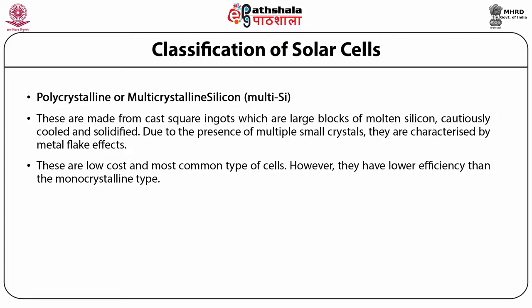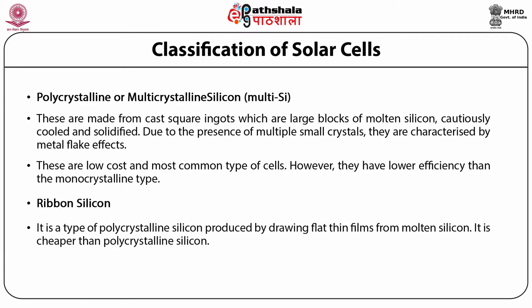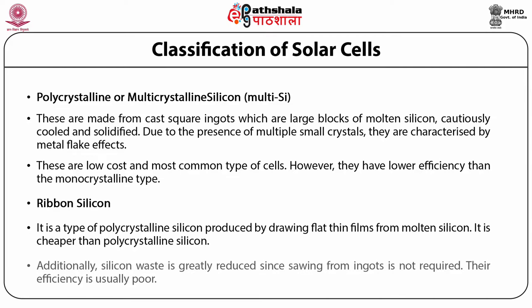Next is ribbon silicon. It is a type of polycrystalline silicon which is produced by drawing flat thin films from molten silicon. It is cheaper than polycrystalline silicon. Additionally, silicon waste is greatly reduced since slicing from ingots is not required. Their efficiency is usually poor.